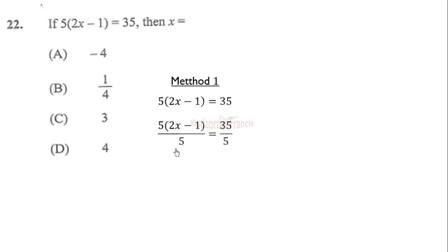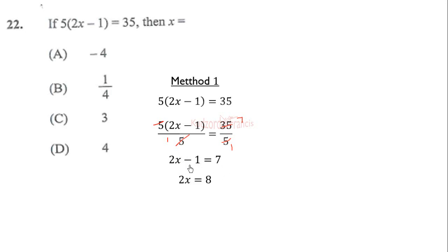We cancel and are left with 2x minus 1 over 1. Since 35 divided by 5 equals 7, we get 2x minus 1 equals 7. The next step is to add 1 to both sides: 7 plus 1 equals 8, and negative 1 plus 1 gives a zero pair, so 2x equals 8.